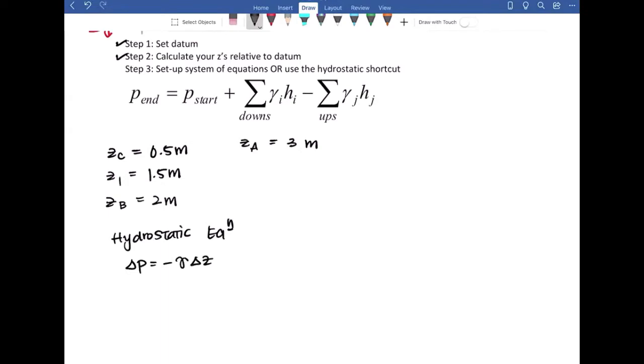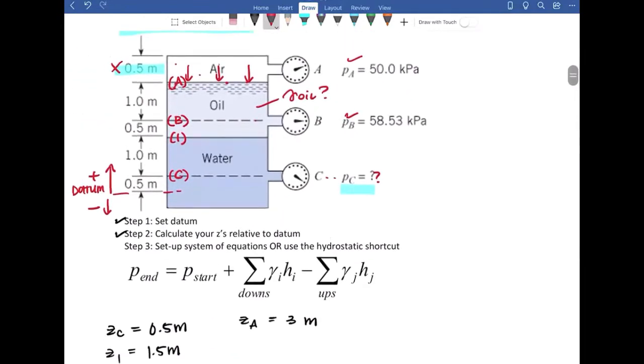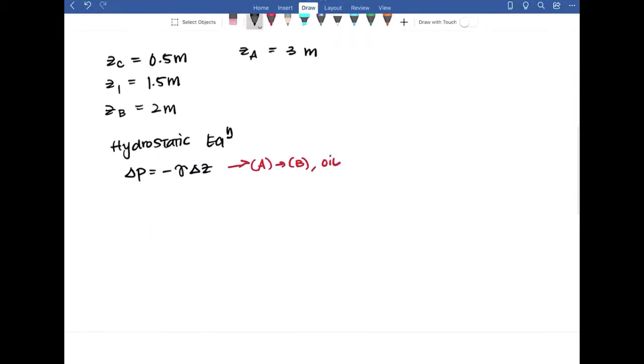We're going to use this equation to move from A to B through oil. So I'm going to rewrite this equation. So PA minus PB is negative gamma oil, ZA minus ZB.